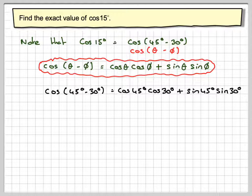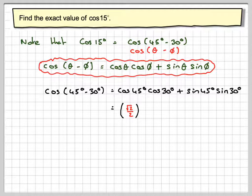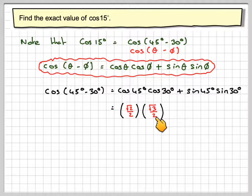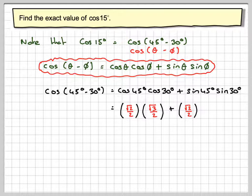The cos of 45° we are supposed to know is √2/2. The cos of 30° we're supposed to know is √3/2. The sine of 45° is √2/2, and the sine of 30° is 1/2.